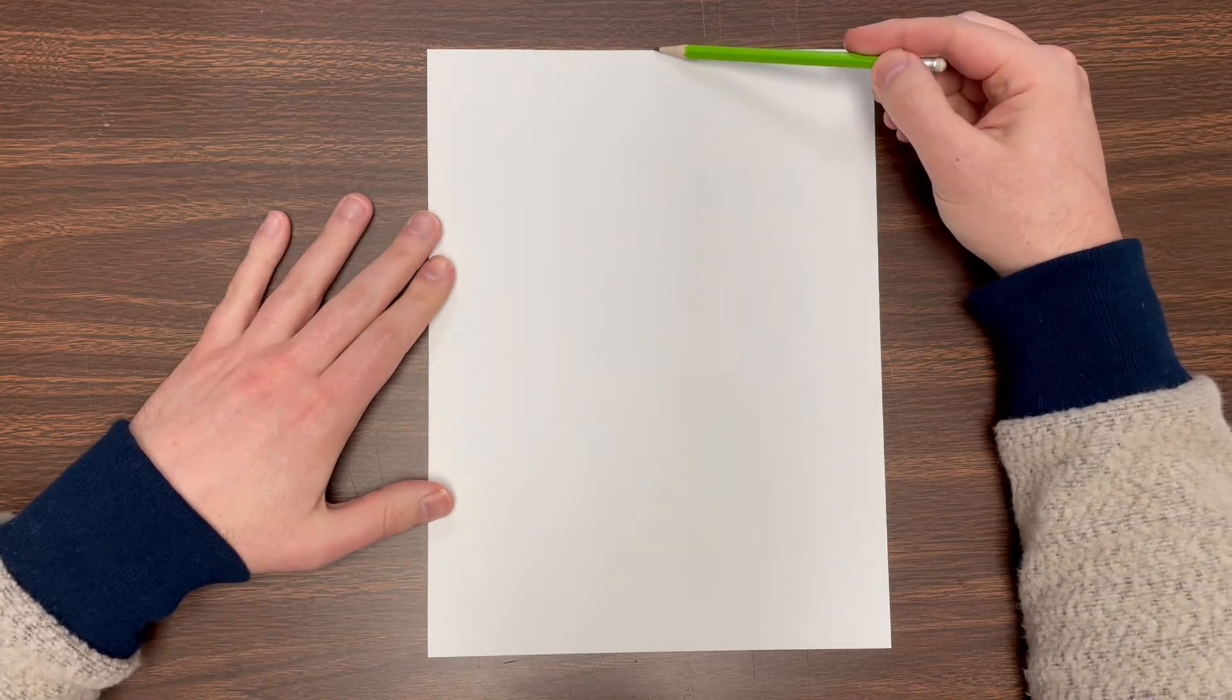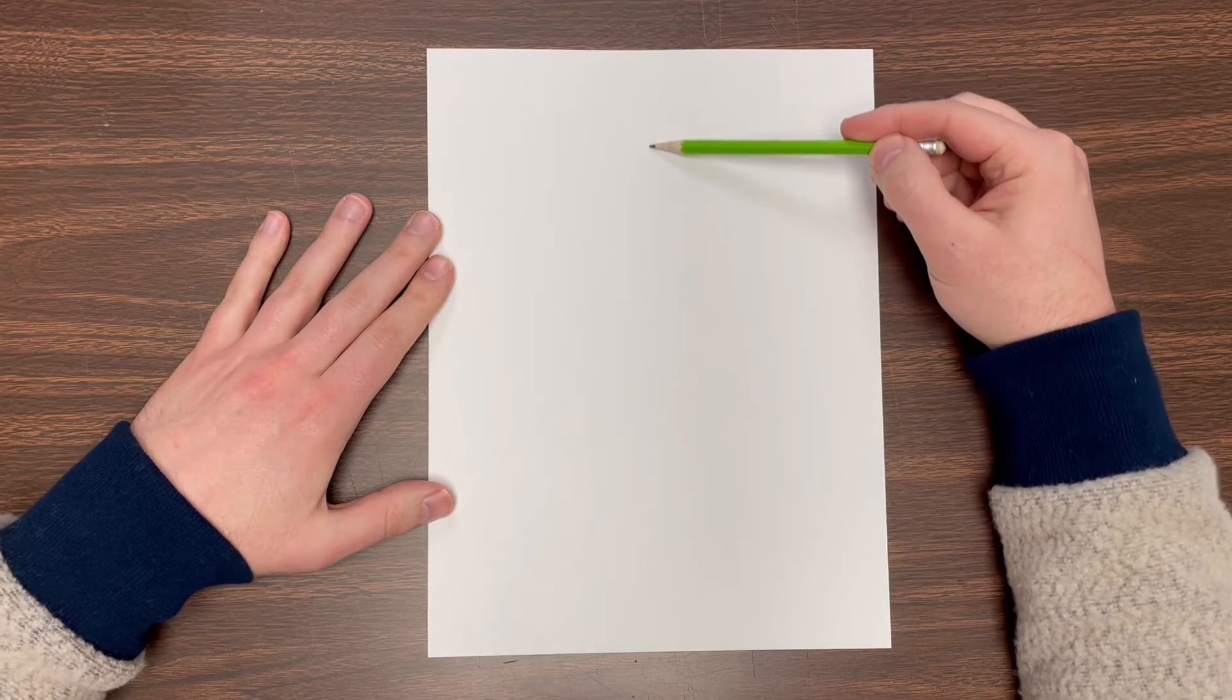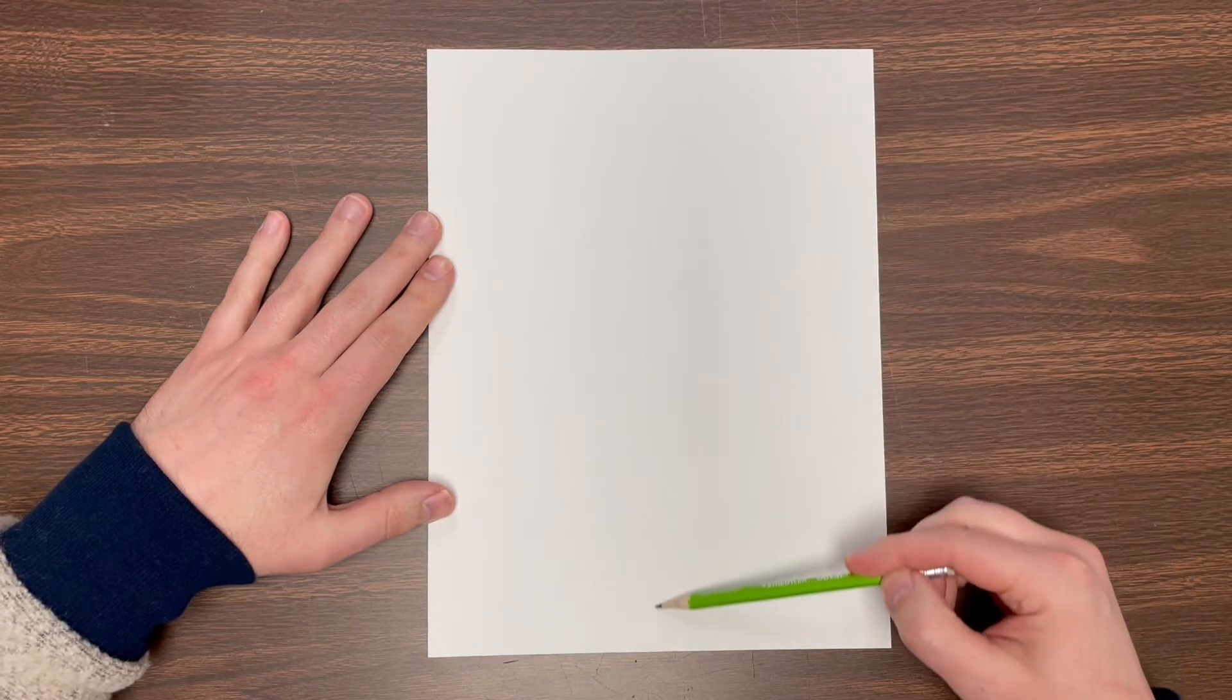Before we get started, I am going to divide my paper up into eighths and this is just gonna be a helpful guide for how we draw it. I'm going to very lightly with my pencil draw a line down the middle. If you notice, I have my paper vertical. I'm gonna draw it very light because these are gonna end up being erased.